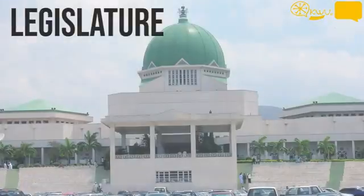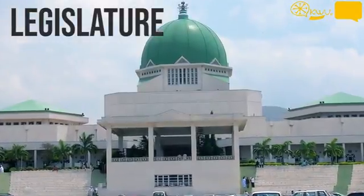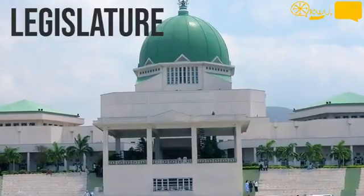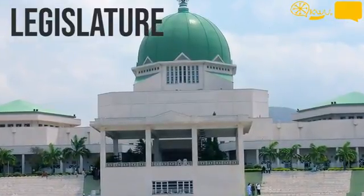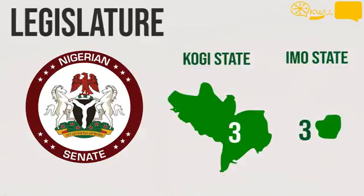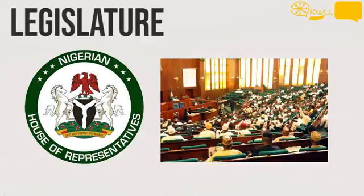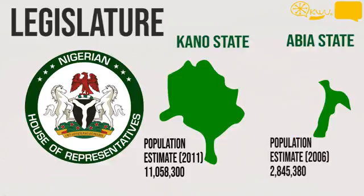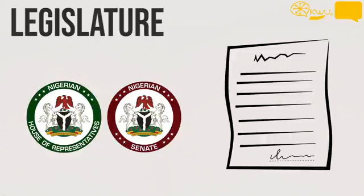The second branch of power is the legislature. In Nigeria, this is known as the National Assembly. The assembly is divided into two groups — the Senate, which consists of three elected senators per state, and the House of Representatives. The number of representatives a state has is dependent on its population. For example, Kano is a large state with 24 representatives, and Abia is a smaller state with eight representatives.